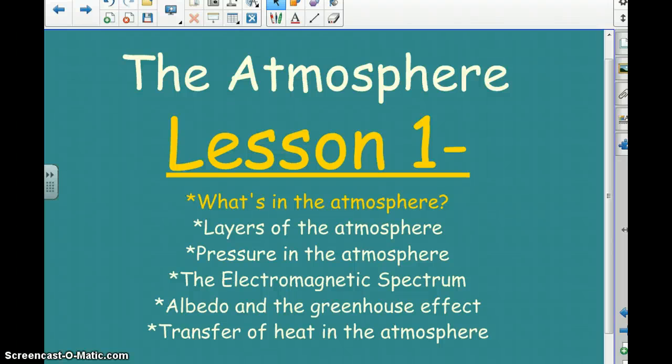We are starting the atmosphere unit. The first lesson that we're going to do is what's in the atmosphere. Eventually we're going to get to layers of the atmosphere, pressure in the atmosphere, talk about the electromagnetic spectrum, albedo and the greenhouse effect, and transferring heat through our atmosphere. But our first area that we're going to talk about is what's in the atmosphere.